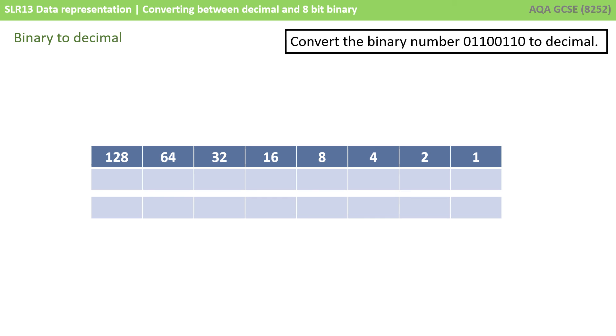The other thing you need to be able to do is convert binary numbers into decimal. And of course, this is really straightforward if you've understood the binary weighting line method.